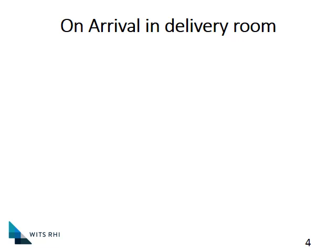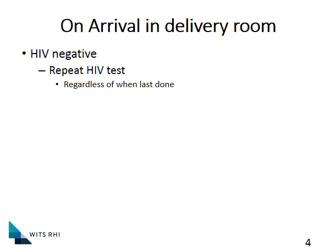Let's start with a mom arriving in the delivery room. The most important question at this stage is to find out what her HIV status is — you do that even before you take the blood pressure. If she's HIV negative, we will repeat the HIV test. Counselling done during pregnancy will have informed the mom that she will be tested regularly if HIV negative — during labour and again at six weeks afterwards — so it's not necessary to go through a whole pre-counselling process.